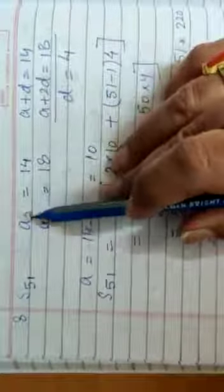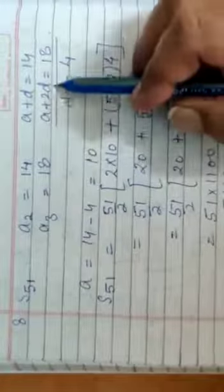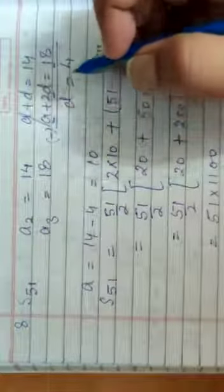Second term is 14, third is 18. Now A2 is equal to 14, so A plus D is 14. A3 is equal to A plus 2D, and that is 18. When we solve these two using elimination method, the sign is changed. D minus 2D is minus D, and 14 minus 18 is minus 4. Minus D equals minus 4, implies D equals 4.